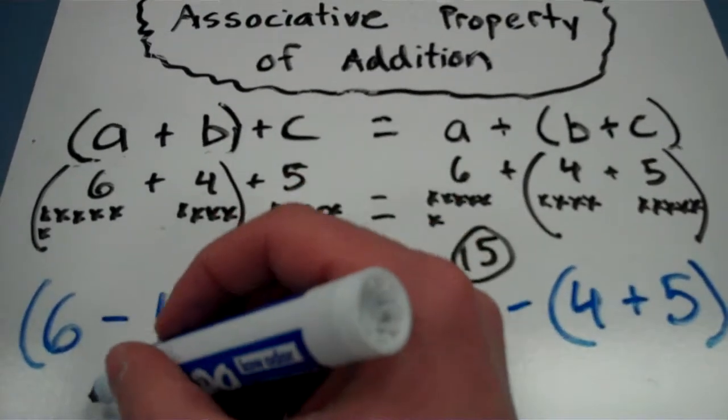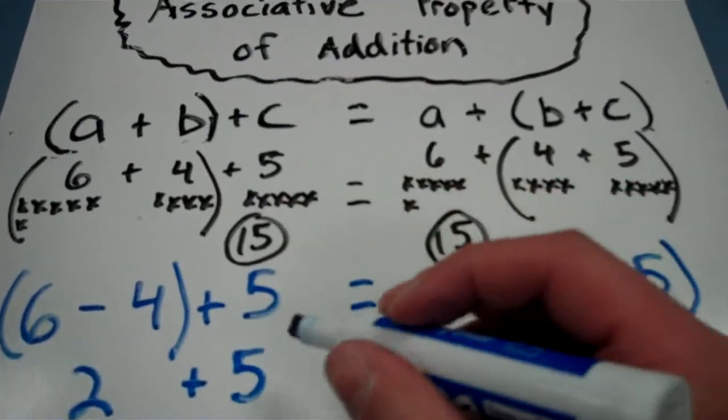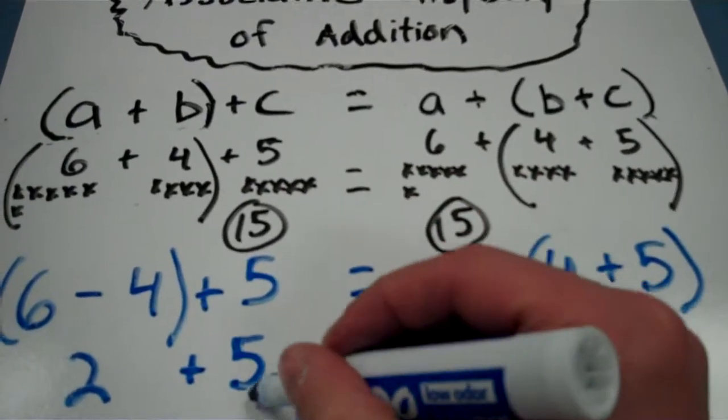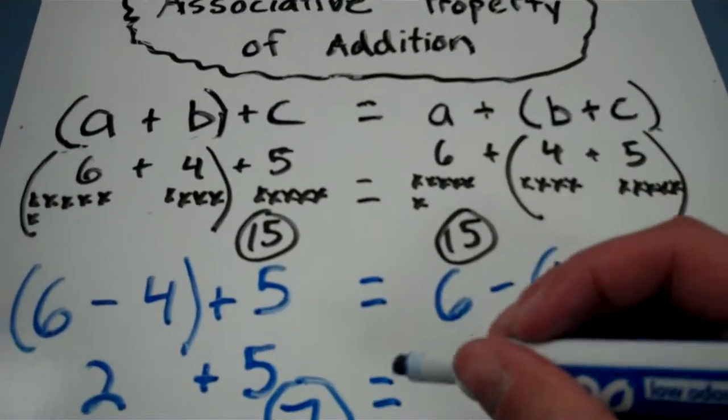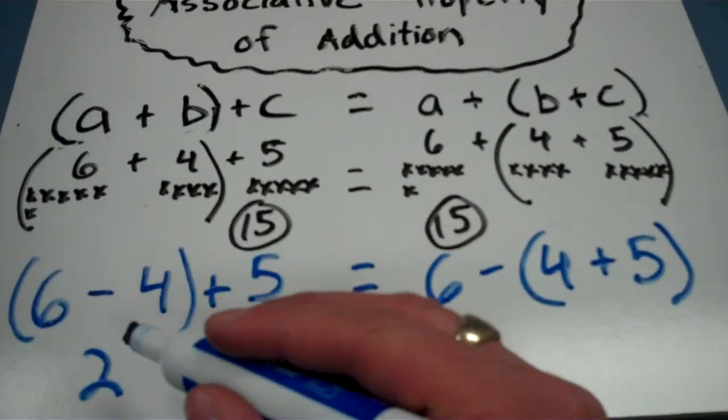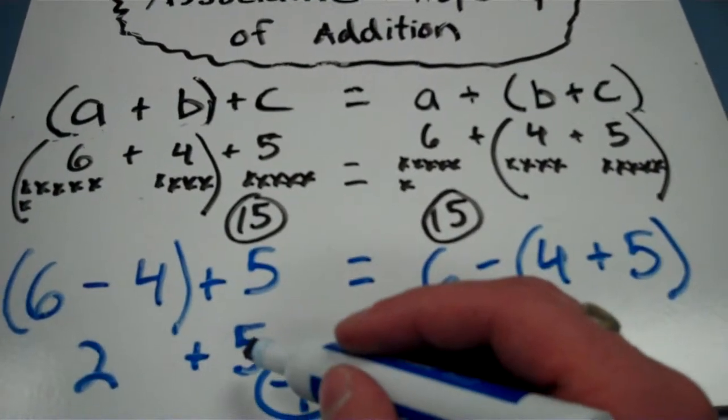6 minus 4 is 2, and 2 plus 5 is 7. That's what I get on this side of the equation. I did the 6 minus 4 first, and then I added the extra 5.